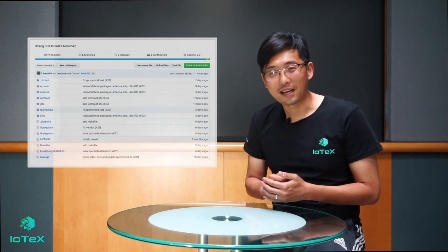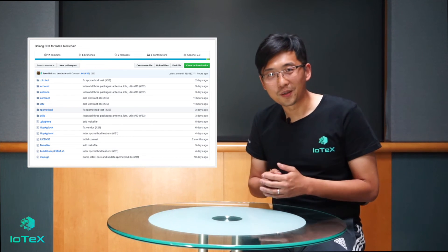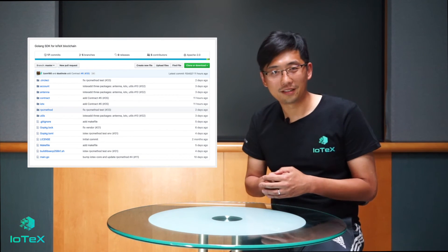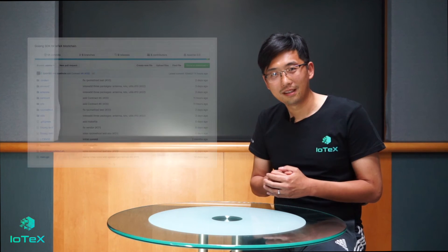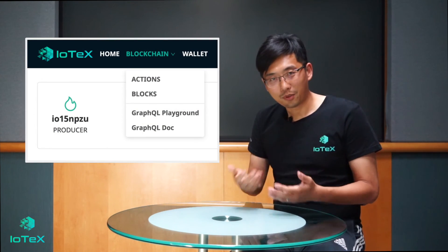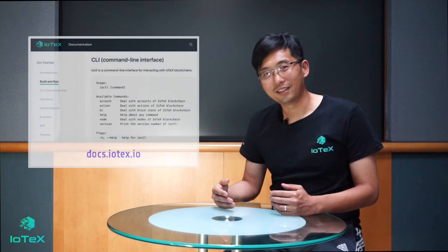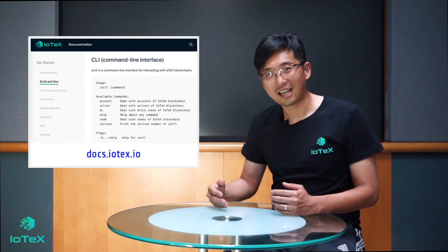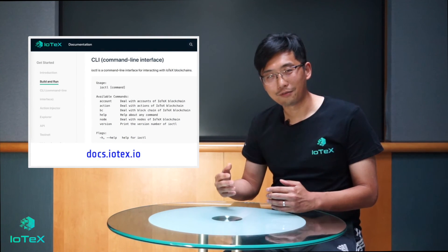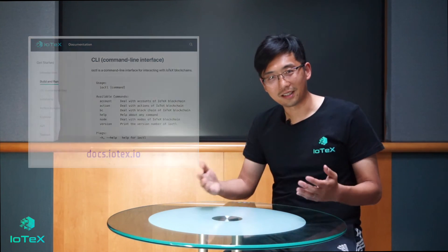The last component is the SDK and Explorer. DApps can interact with the IoTeX blockchain using our SDK, which is written in GoLang and TypeScript for better security and ease of use. Users can also create accounts, interact with the chain, and deploy smart contracts using GraphQL on our Explorer. We have all the technical information documented at docs.iotex.io, where you can find references to the command line tools, SDK, and APIs. Please take a look.